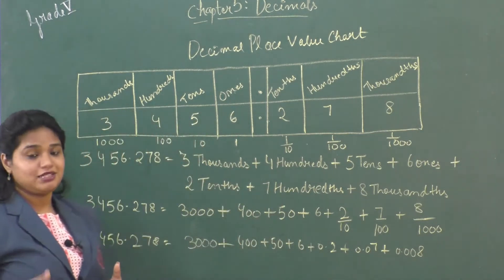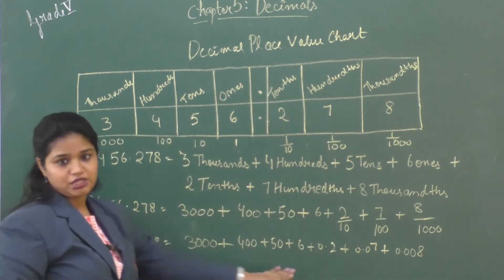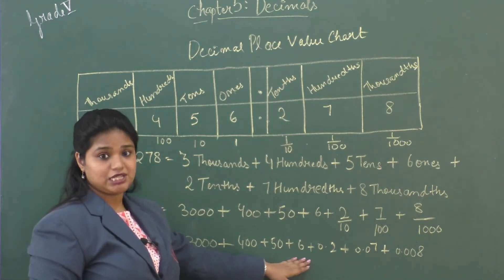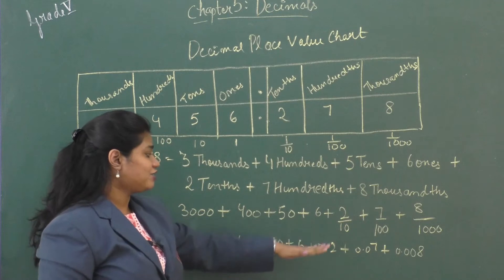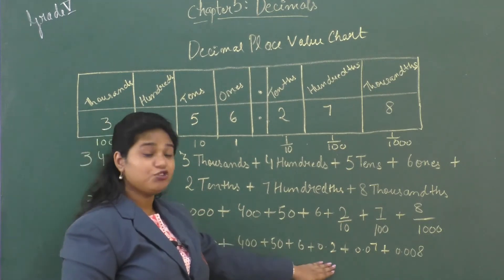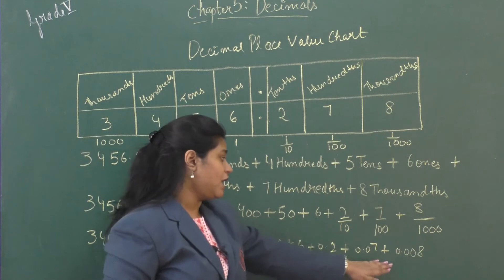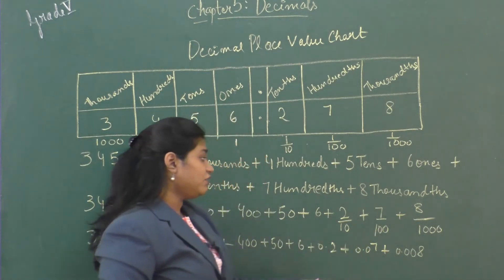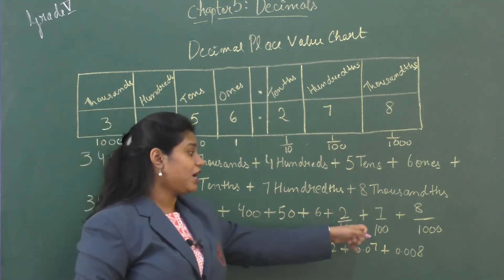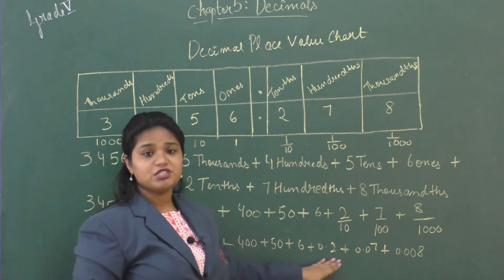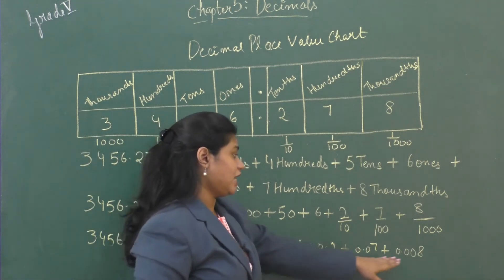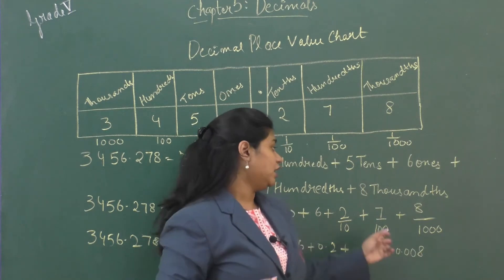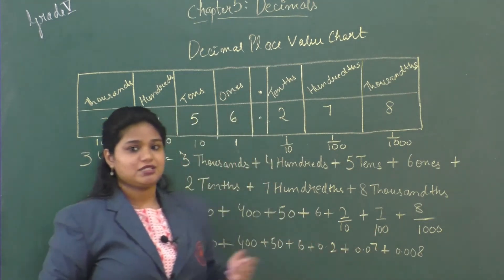The third form is the decimal form. You first write the whole number as it is: three thousand plus four hundred plus fifty plus six. Then we convert the fraction into decimal numbers: 0.2 plus 0.07 plus 0.008. We will learn how to convert 2/10, 7/100, and 8/1000 into 0.2, 0.07, and 0.008 in the next example.